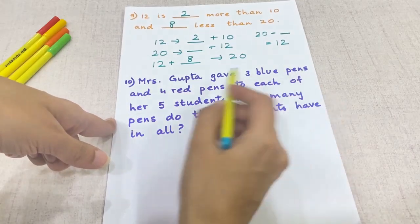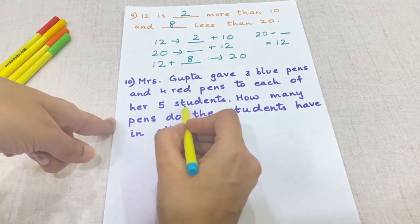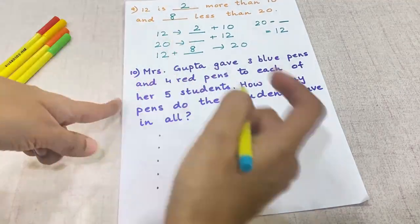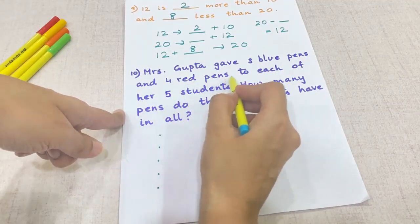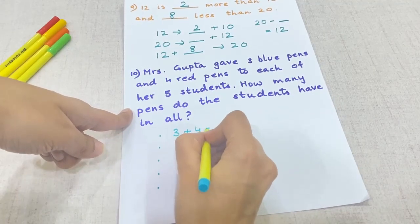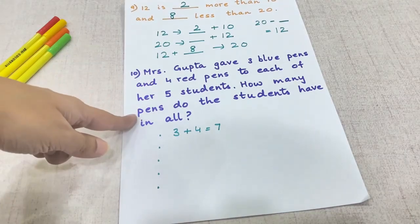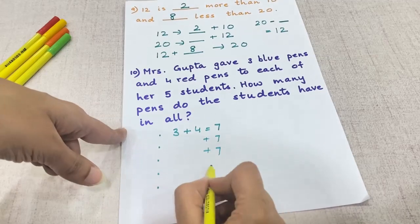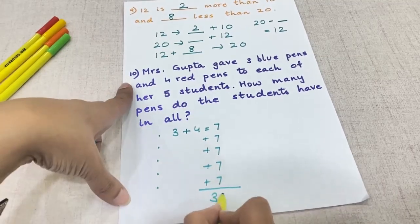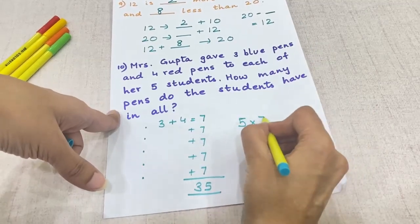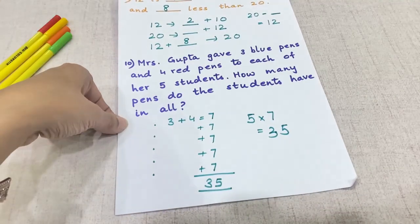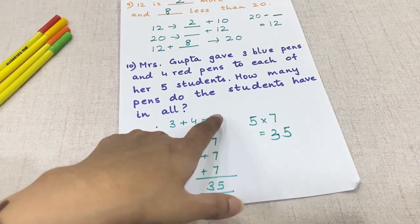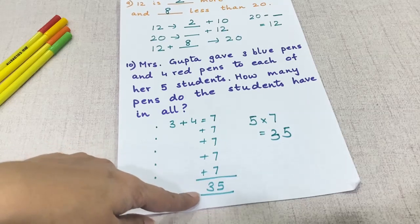Mrs. Gupta gave three blue pens and four red pens to each of her five students. So let's put five dots each representing a student. She gave three blue and four red, which means seven pens to each student. How many pens do the students have in all? The number needs to increase, so we add seven five times for each child — 7 times 5 — and the answer is 35.